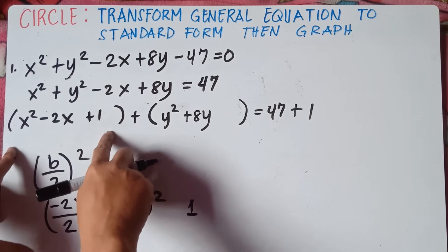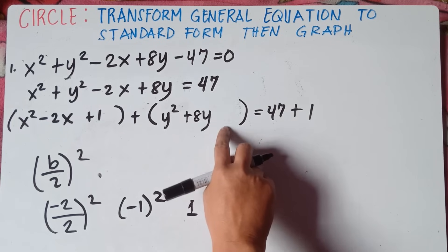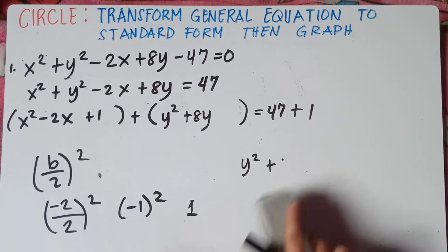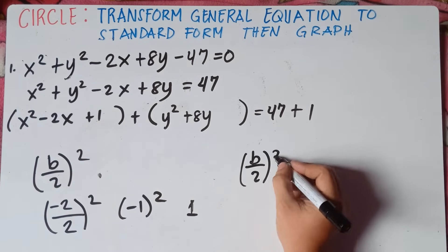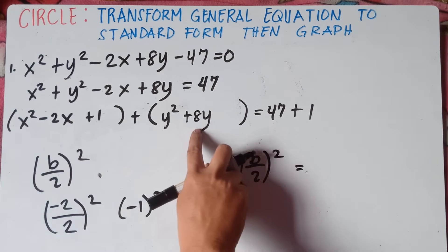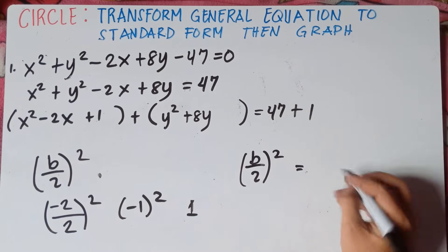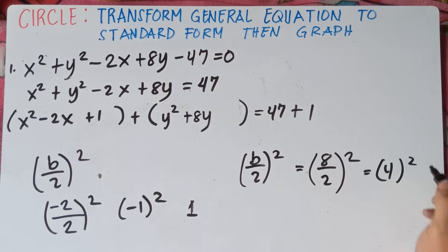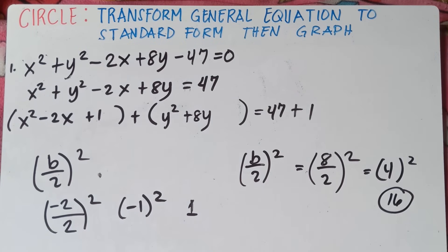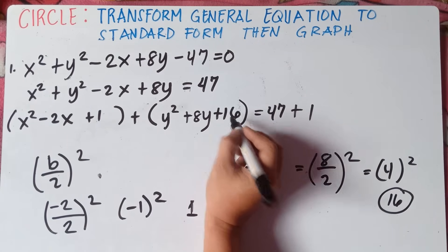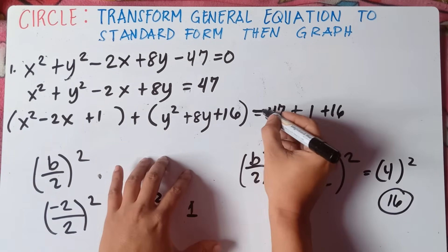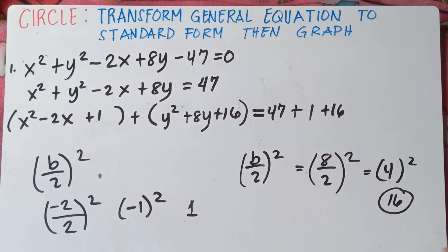So the new equation for x is: x squared minus 2x plus 1. Now we need to add another constant for the y equation. Copy the formula: b divided by 2, squared. The b here is 8, beside y, the linear term. So 8 divided by 2 is 4 squared. 4 squared is 4 times 4, which equals 16. So you add 16 on this side and also add 16 on the other side. You add 1 and 16 on the left side, and also add 1 and 16 on the right side to keep the equation balanced.